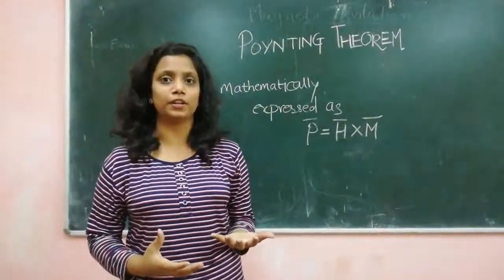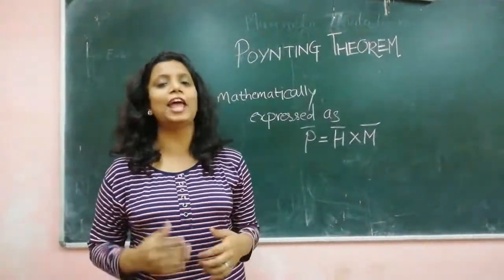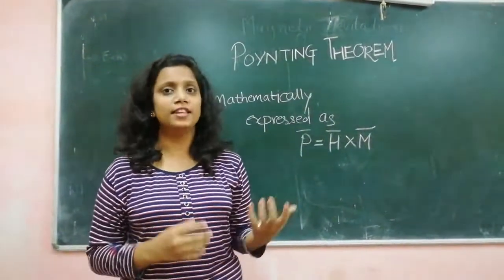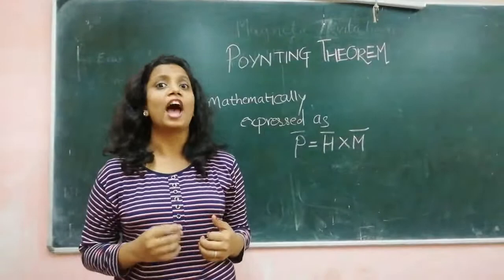There is a simple relation between the rate of energy transfer and amplitude of electric and magnetic intensity. This relation is called the Poynting vector, after J.H. Poynting.